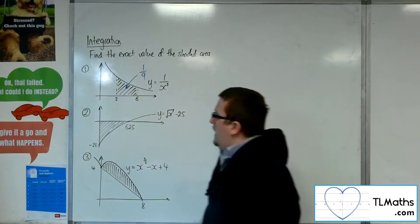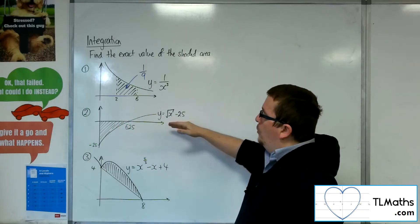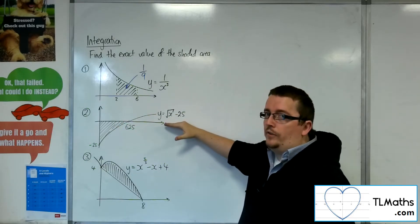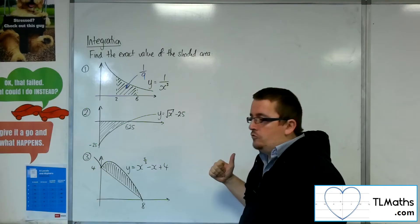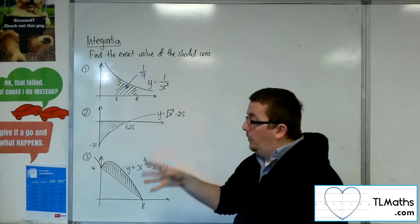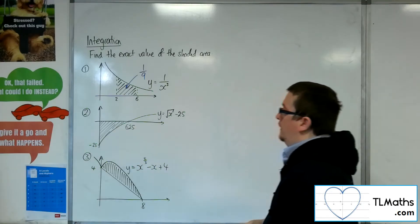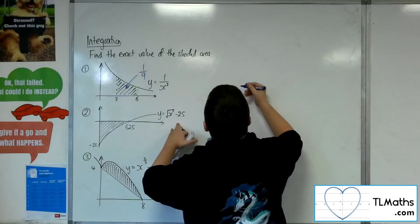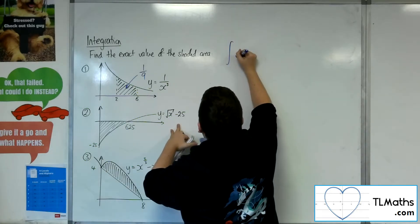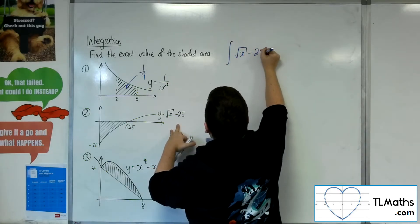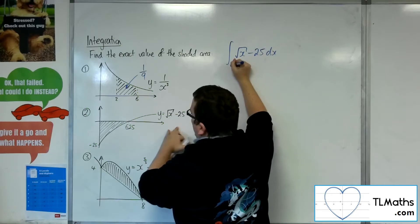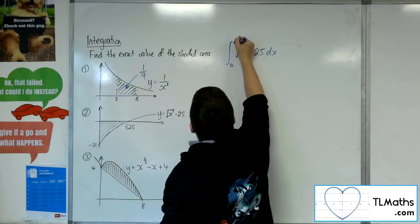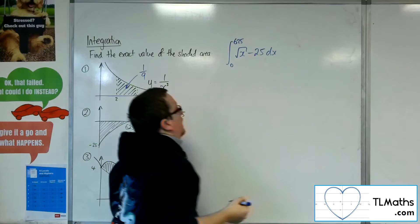So number 2, the area is below the x-axis, so when we integrate, we should get a negative result. And so I want to take the positive result to get the area. So we're going to be integrating this root x, take away 25, between 0 and 625.